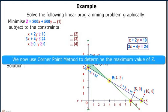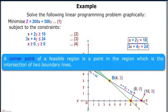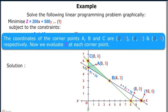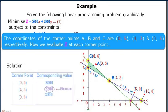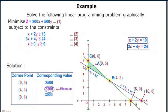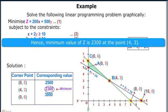We use the corner point method to determine the minimum value of z. A corner point is at the intersection of two boundary lines. The coordinates of the corner points A, B, and C are (0, 5), (4, 3), and (0, 6) respectively. Evaluating z at each corner point, we see that at the corner point (4, 3) the value of z is 2300, which is the minimum. Thus, the minimum value of z is 2300.